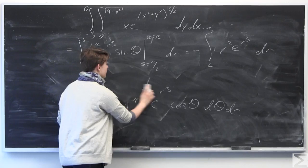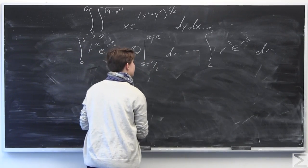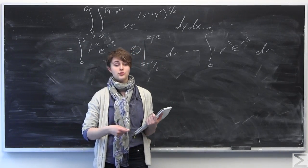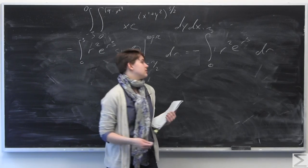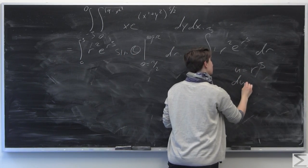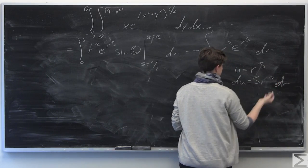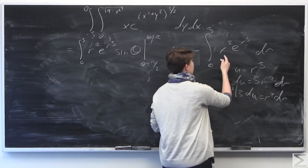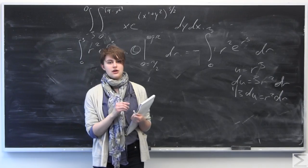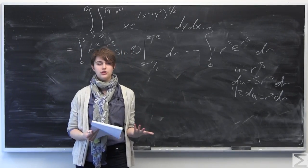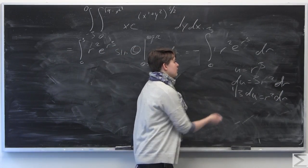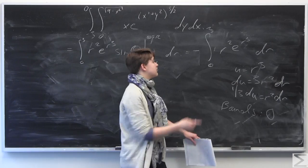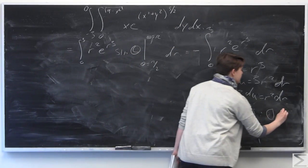Now we just integrate with respect to r. In the integrand we have both a function and its derivative: r cubed and r squared. The derivative of r cubed is 3r squared, so the best option is a u substitution. We set u equal to r cubed, and du equals 3r squared dr, so r squared dr equals one third du. We also need to recalculate the bounds in terms of u: when r equals 0, u equals 0; when r equals 3, u equals 27.